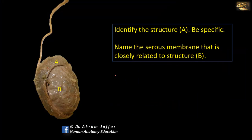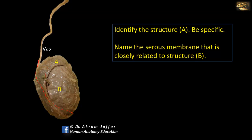Identify structure A, be specific. Name the serous membrane closely related to structure B. This is a testis covered by the epididymis. The epididymis has a head, body, and tail. The tail of the epididymis continues upwards as the vas deferens, one of the contents of the spermatic cord. The epididymis is a highly convoluted tube that grossly takes the shape of a head, body, and tail, and it is the tail that continues with the vas deferens.